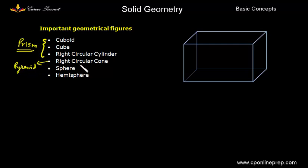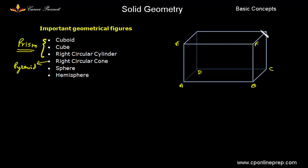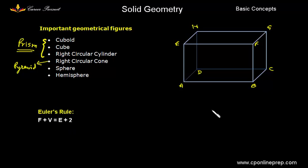Before we go ahead, let's see one more important result. For any solid figure, say this is a cuboid with vertices A, B, C, D, E, F, G and H. There is an important relation which is called Euler's rule. Let me explain what F, V and E are.